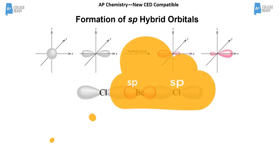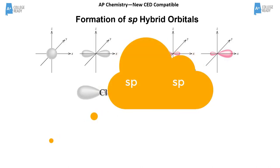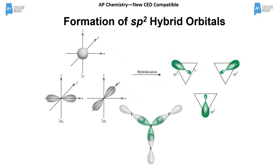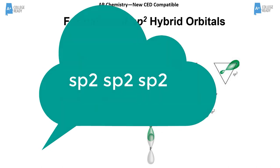For three regions of electron density — like boron trifluoride — boron is connected to three things with no lone pairs. Three regions means we use the s orbital and two p orbitals to create three sp²-hybridized orbitals. The rule is: count how many things the central atom is connected to plus the number of lone pairs, and that gives you the number of regions and the hybridization.